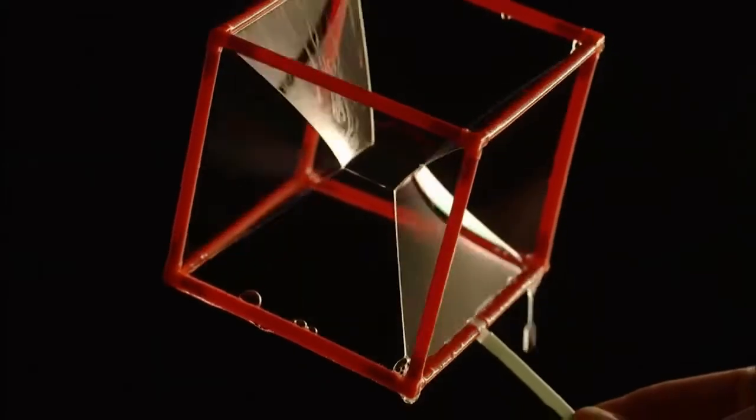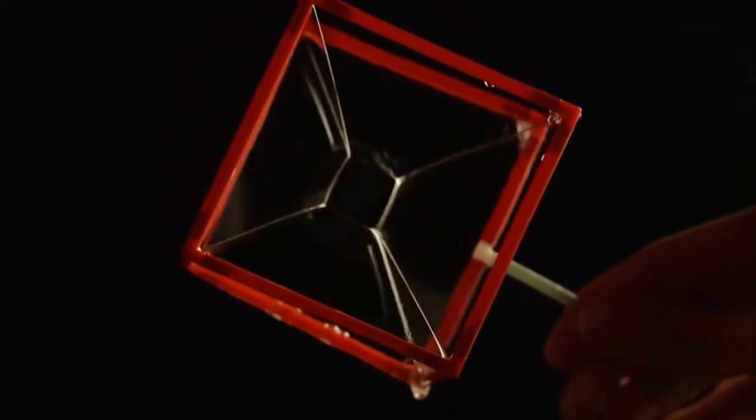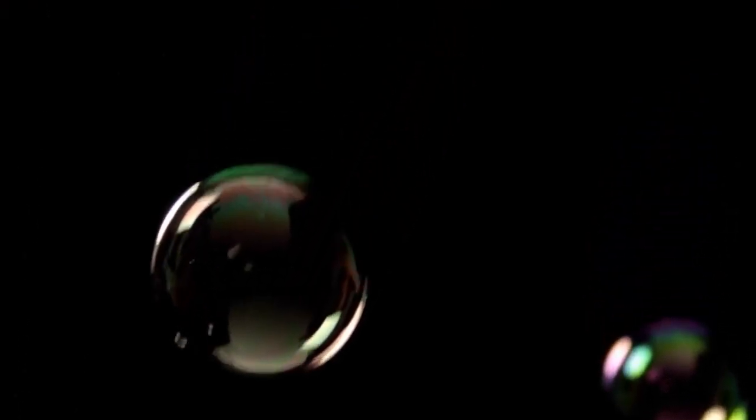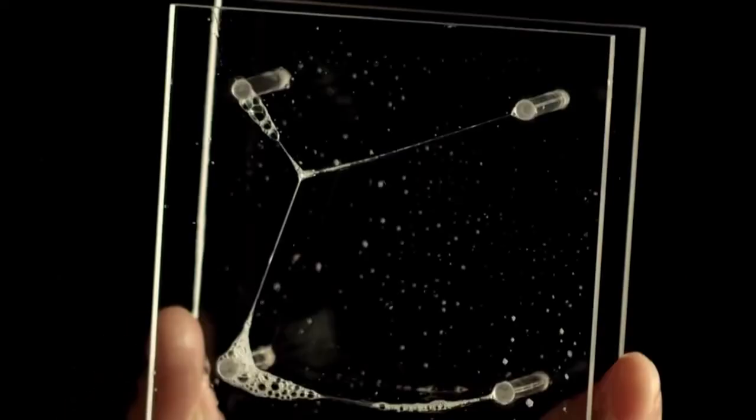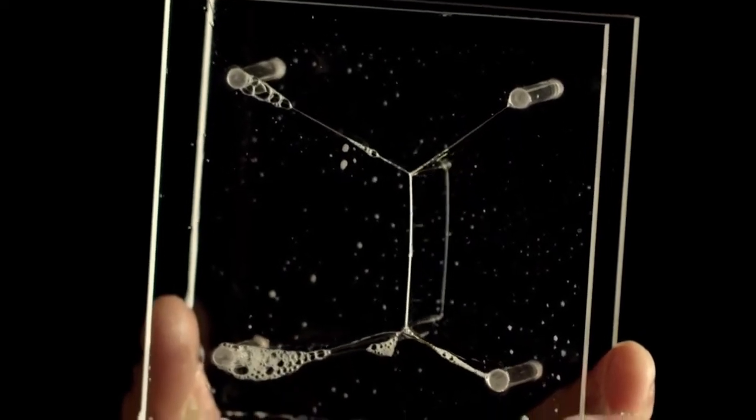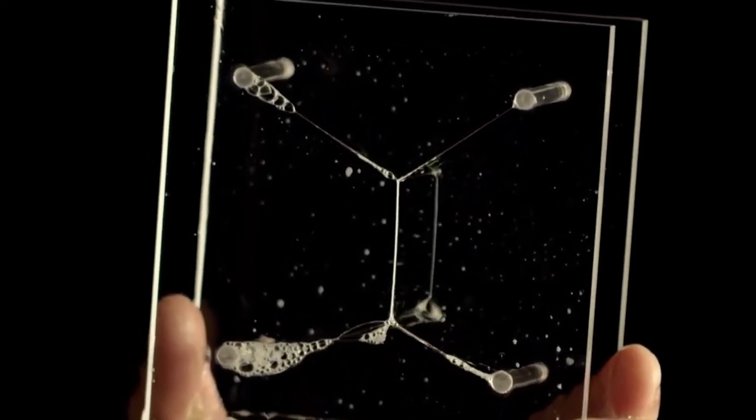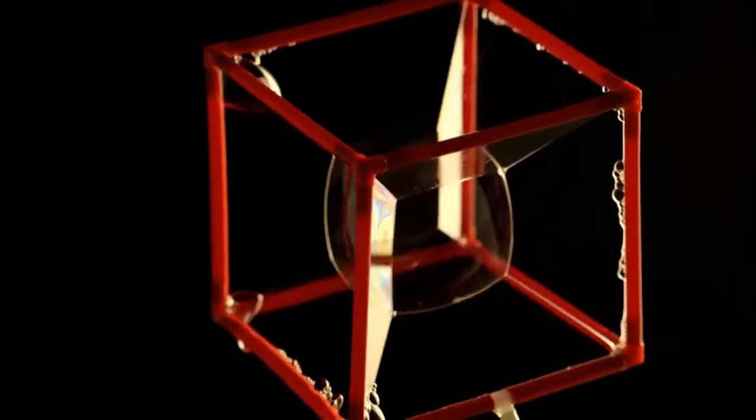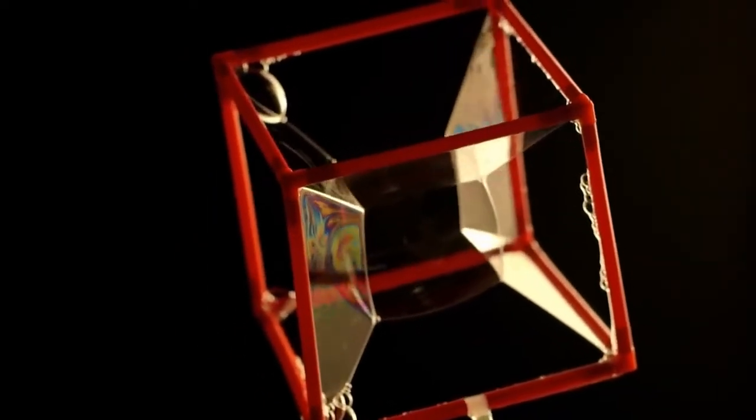All these angles are exactly 120 degrees. Soap films do this because of surface tension, pulling in every direction on the bubble's surface. That means a soap film will always try and minimise its surface area. Free floating bubbles are spherical because that's the shape with the least amount of surface for any given volume. The soap film connects the four points like this because it's the arrangement with the least surface area.